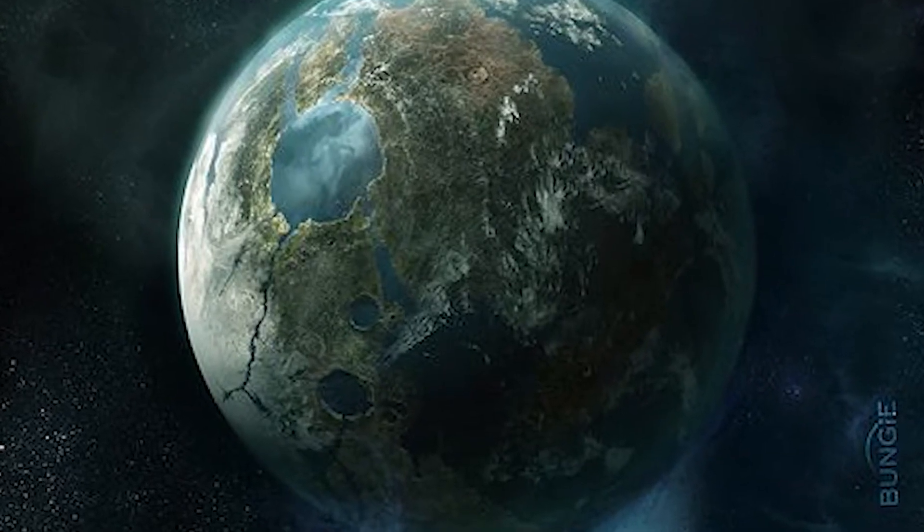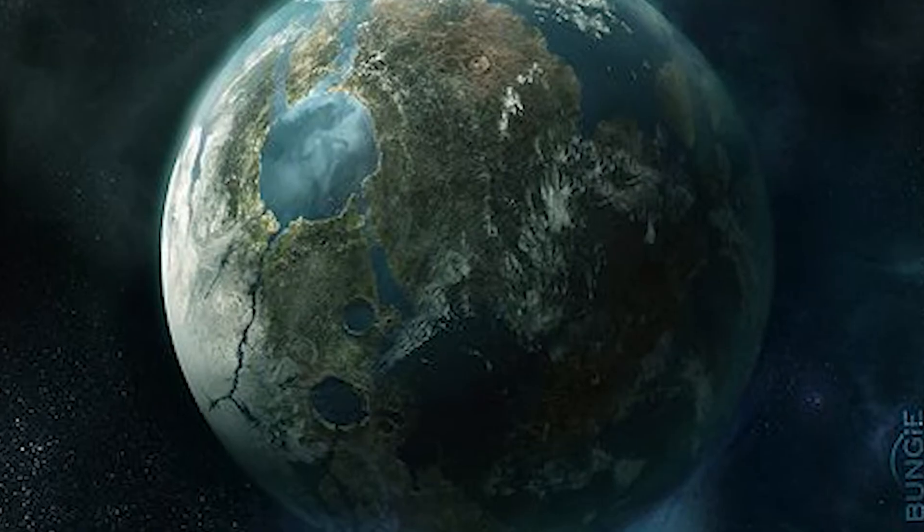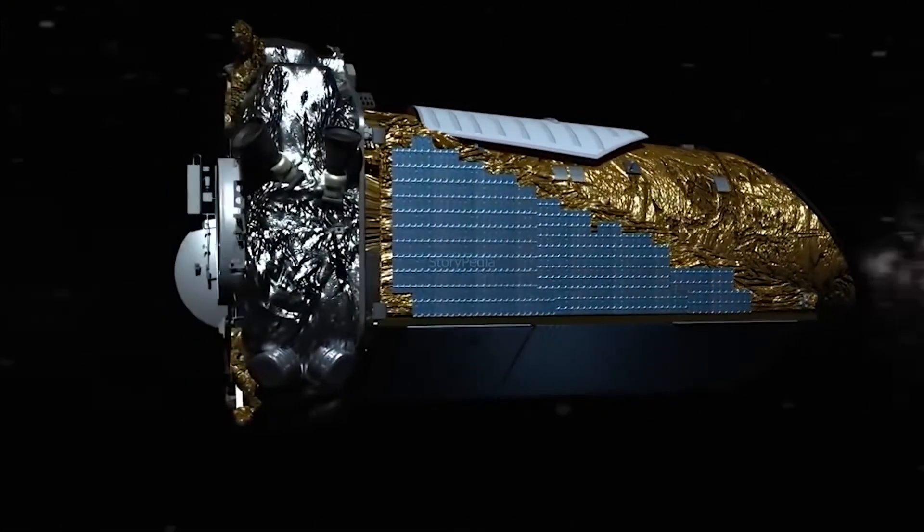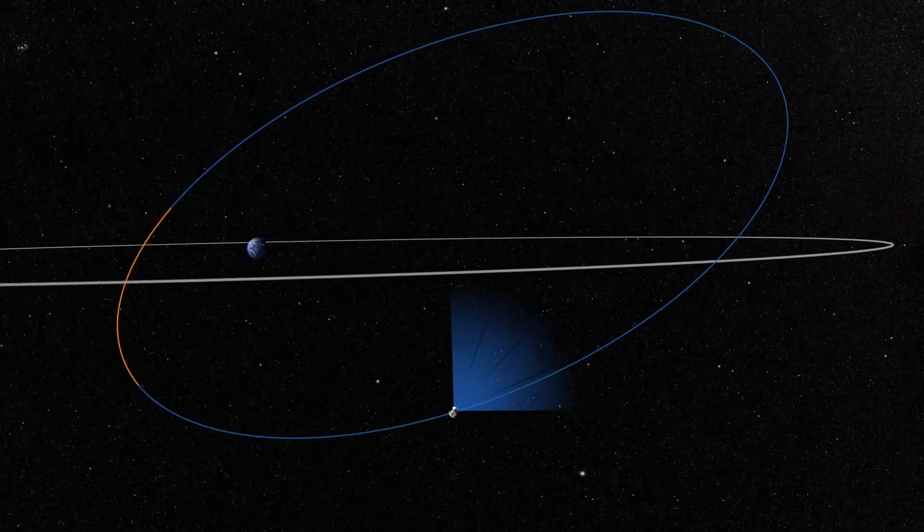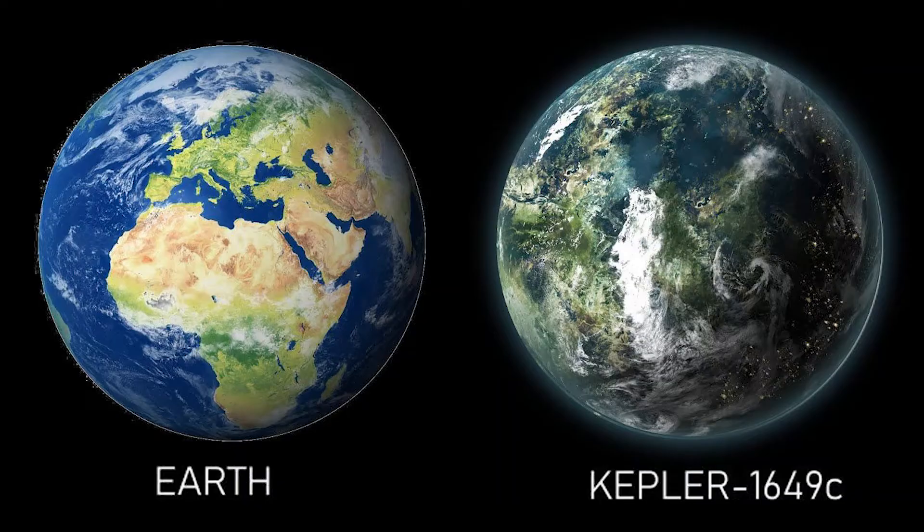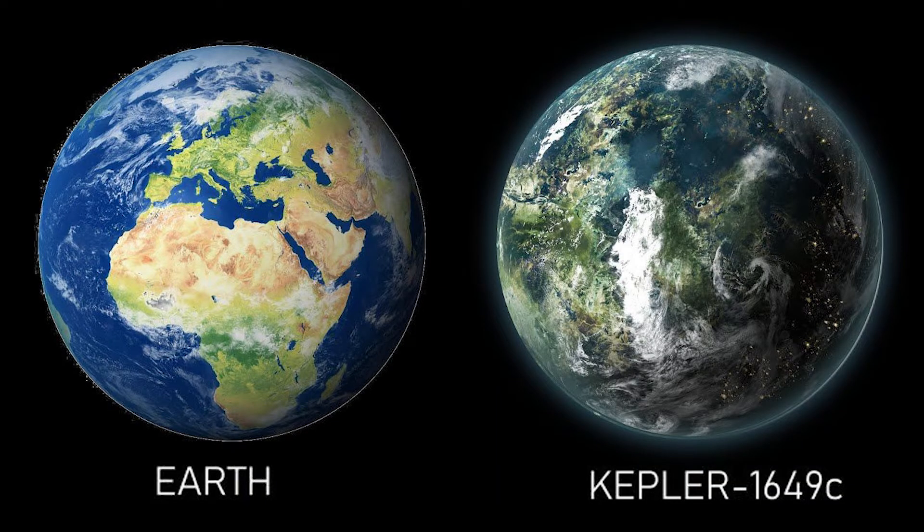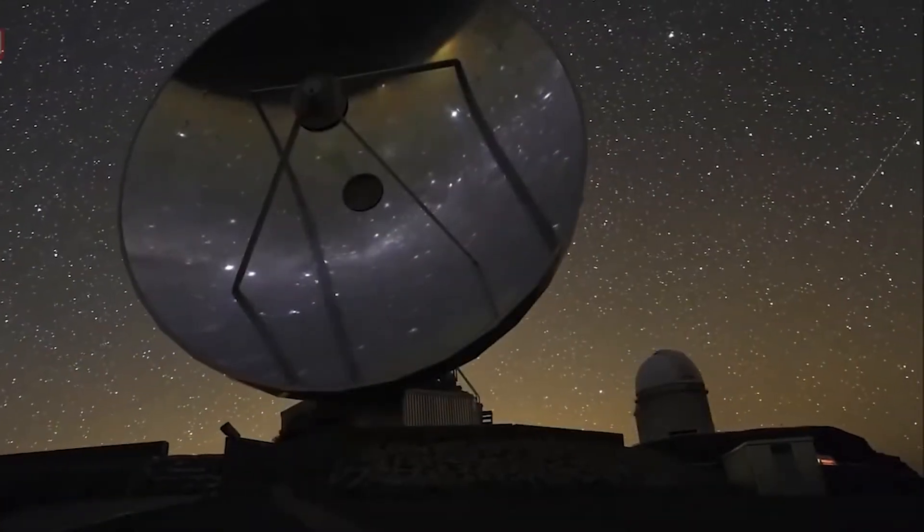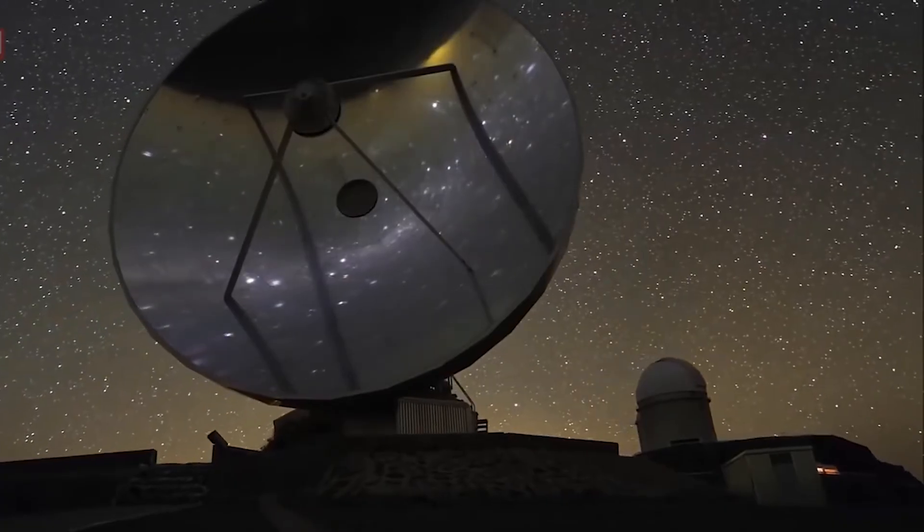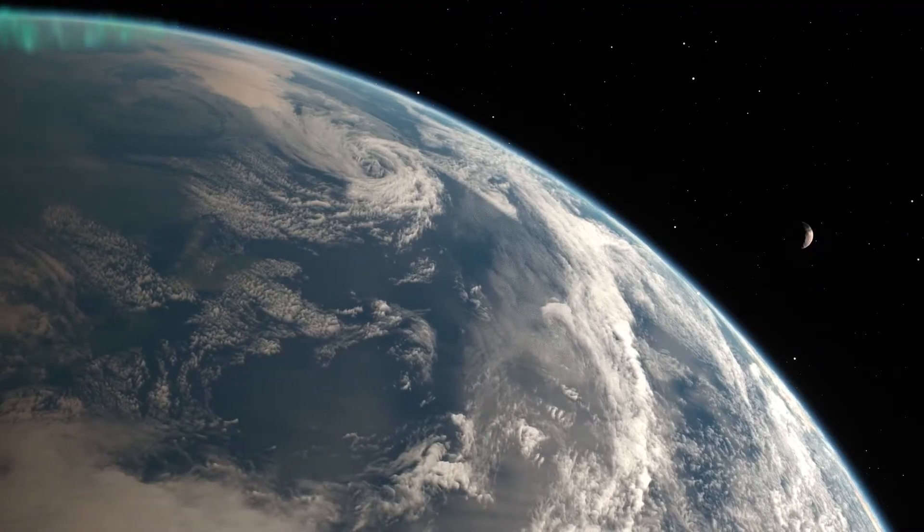Number eight, Kepler-1649. Scientists found Kepler-1649 after reanalyzing data from NASA's Kepler Space Telescope. It was discovered that the exoplanet orbited in its star's habitable zone and was around the same size as Earth. According to NASA, a computer algorithm mistakenly recognized the astronomical body during the initial data collection from the telescope, but in 2020 it was found to be a planet.